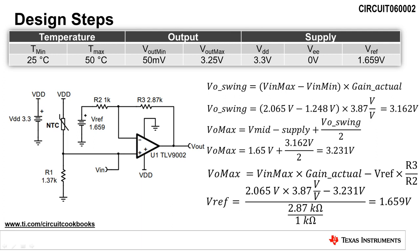Now that we know the output voltage swing, we need to calculate the maximum output voltage when the output is symmetrical around mid-supply, so that we can calculate the reference voltage, VREF, for the circuit. The maximum output voltage is calculated to be 3.231 volts. Using the transfer function of the circuit, we calculate the reference voltage using the maximum output voltage, maximum input voltage, and actual gain. Solving the transfer function for VREF, we calculate the reference voltage to be 1.659 volts.